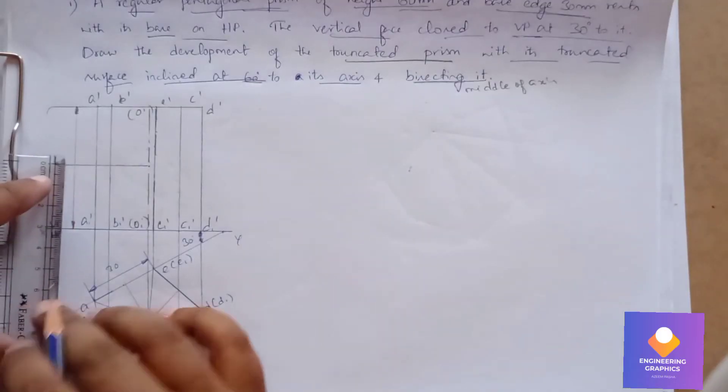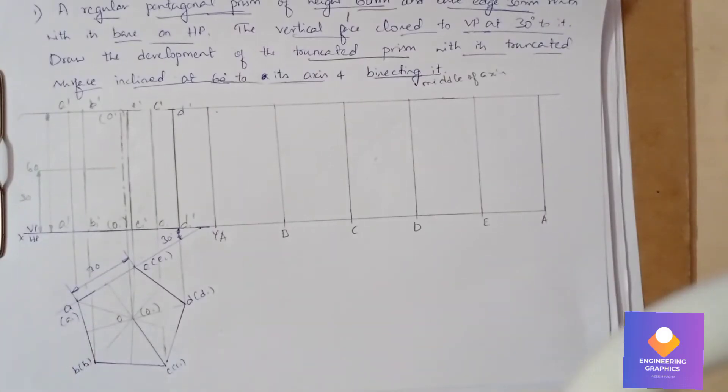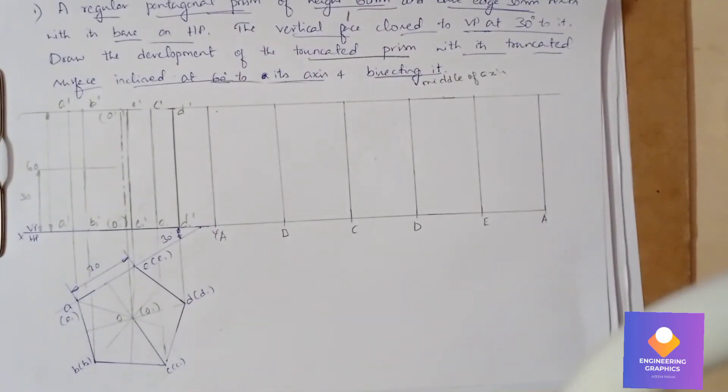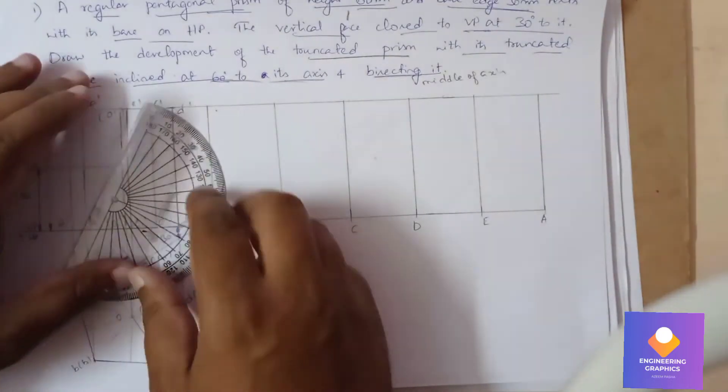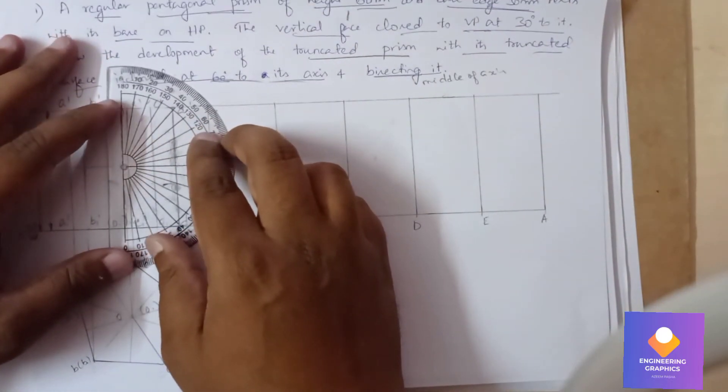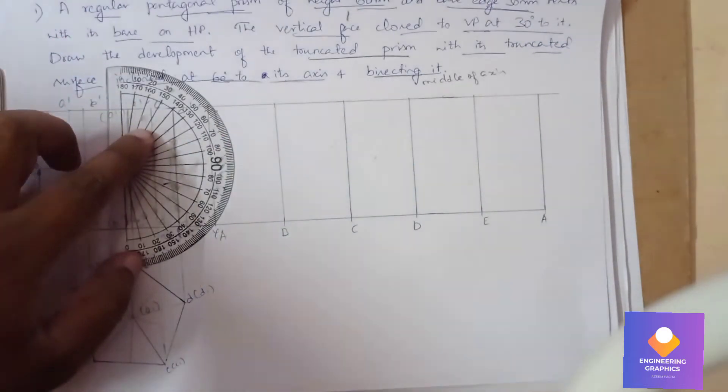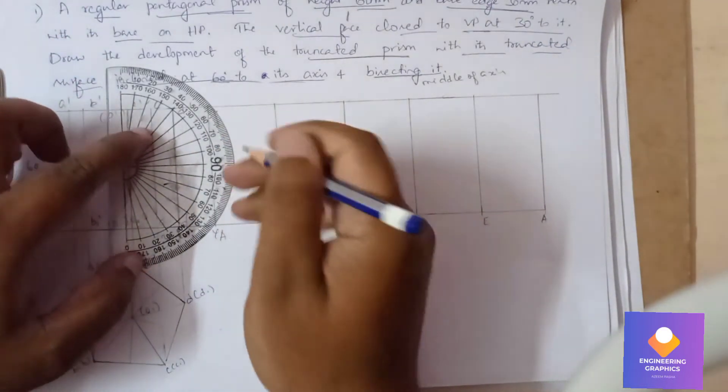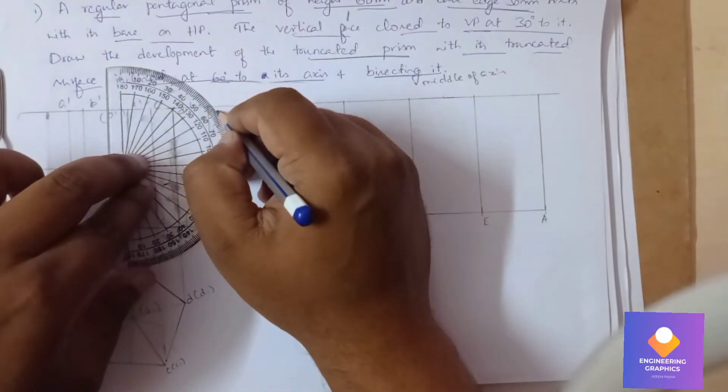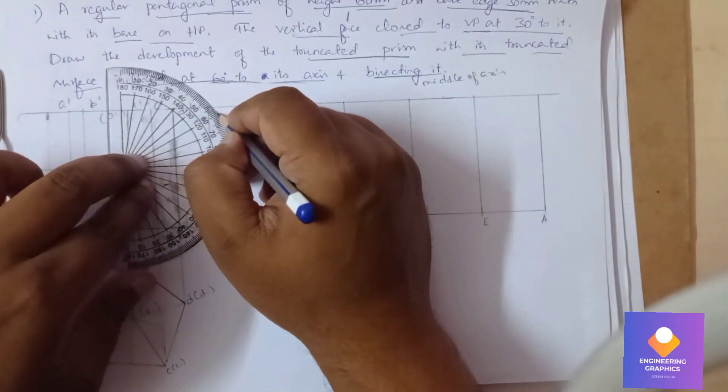You can show the dimension here. In this question, the axis will be having an inclination of 60 degrees—that is the truncated surface. From that axis, we need to consider an angle of 60 degrees. This is a tricky question.